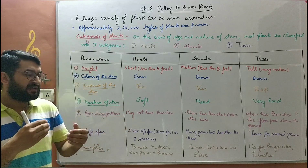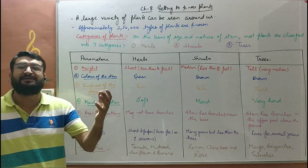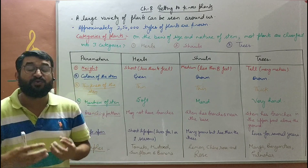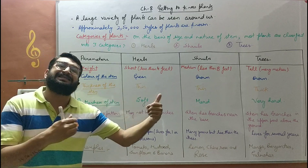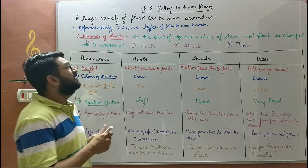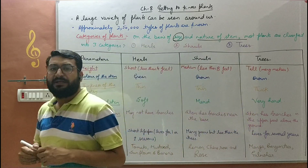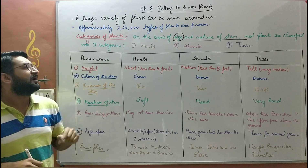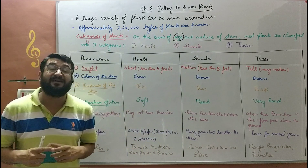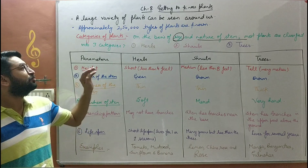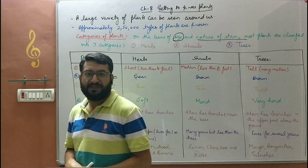So how can we categorize them and differentiate them for convenient study — to learn their features easily? Many plants are not easy to study or memorize. To make it easier, we categorize them — we divide them on the basis of their size and nature of their stem. Most plants are classified into three forms: herbs, shrubs, and trees, based on their size, lifespan, and the nature of their stem.